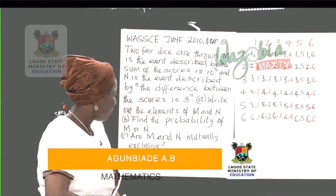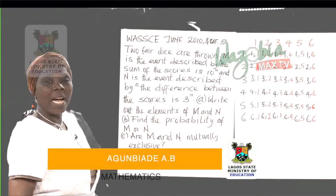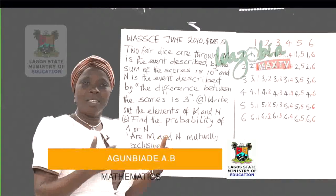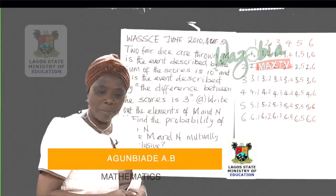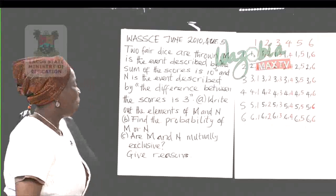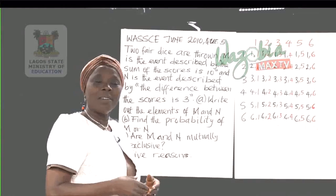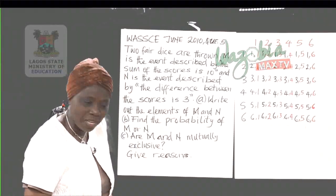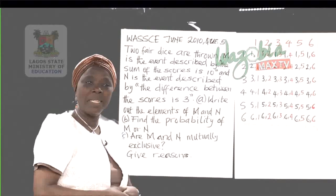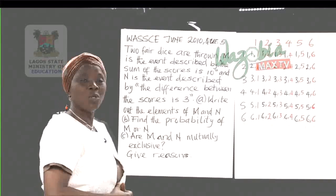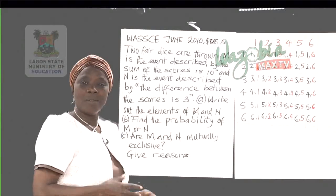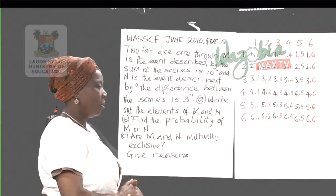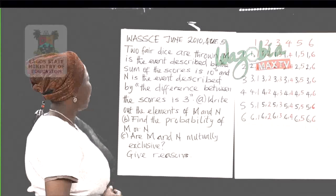Welcome back. We have learned how to find the probability of events, mutually exclusive events, and independent events. Now we want to solve example questions on probability problems.